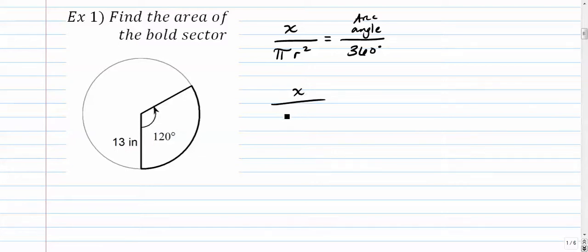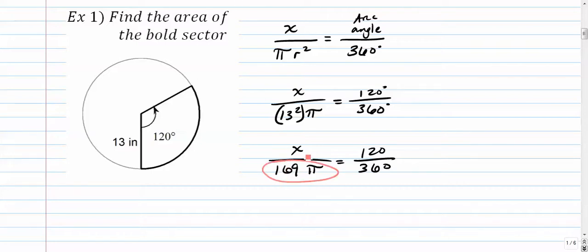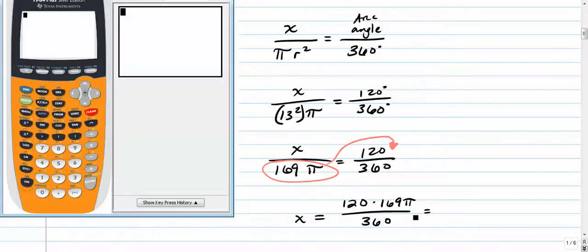Pi r squared is equal to the angle or the arc divided by 360. So x over 13 squared times pi is equal to 120 degrees over 360 degrees. 13 squared is 169 pi is equal to... You can simplify this fraction if you want to, but for our sake, I'm not going to do that. And now we can just cross multiply or if you want to look for a little shortcut, if your x is on top and something is on bottom, just move that to the numerator of the other side.